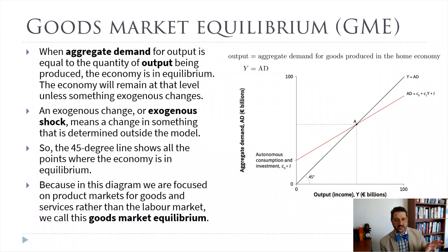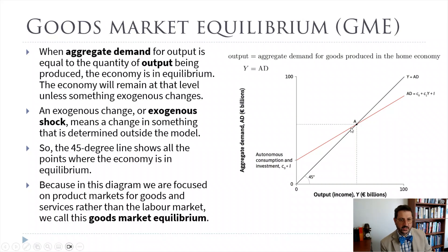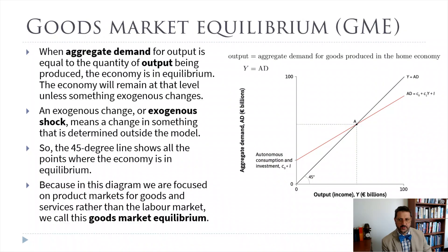That is our goods market equilibrium, where aggregate demand equals GDP — where we buy the same amount as we produce, so there's no change in inventory investment. This model is sometimes called the Keynesian cross because it's built on the ideas of John Maynard Keynes, and there's a place where two lines cross.